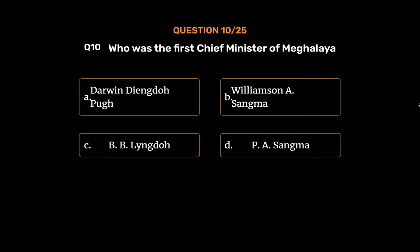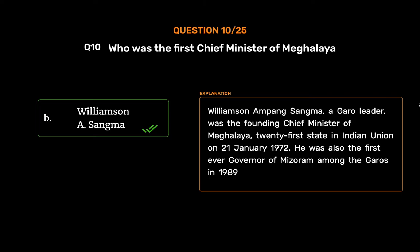The correct answer is Option B: Williamson A. Sangma. Williamson M. Phang Sangma, a Garo leader, was the founding chief minister of Meghalaya, the 21st state in the Indian Union, on the 21st of January 1972. He was also the first-ever governor of Mizoram among the Garos in 1989.